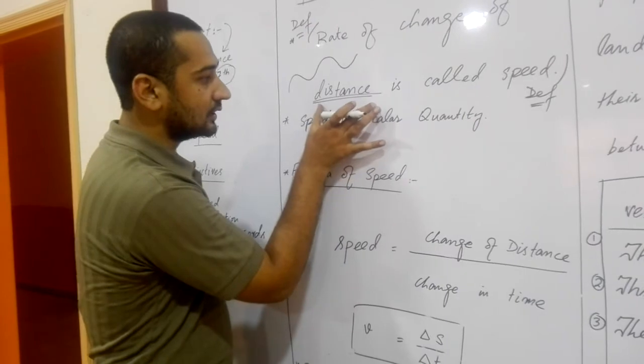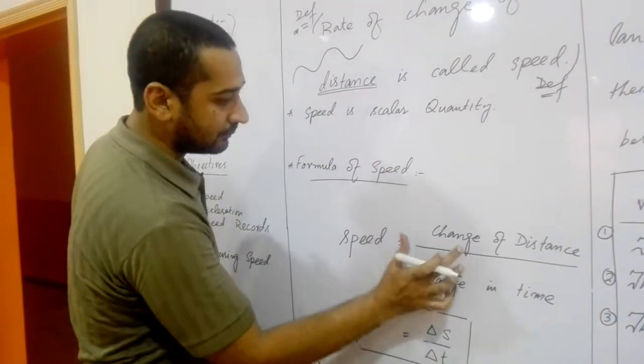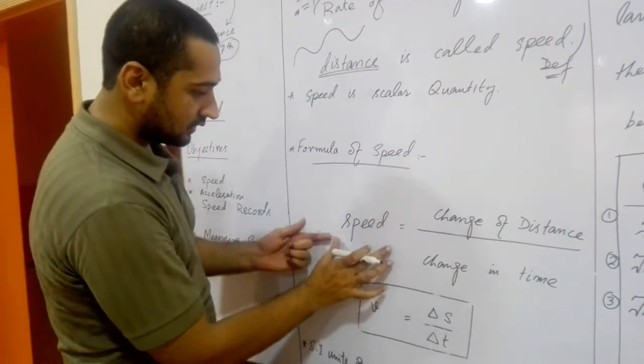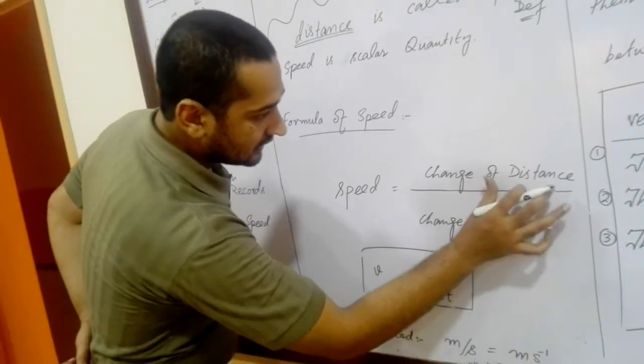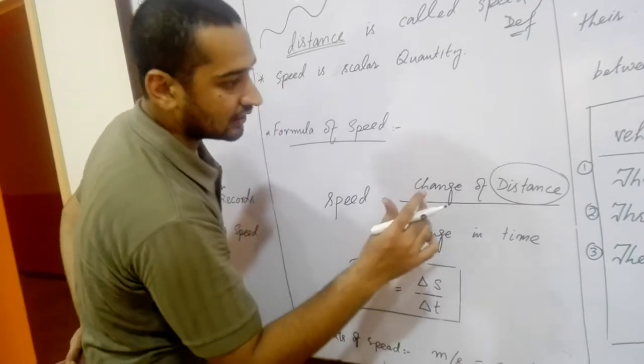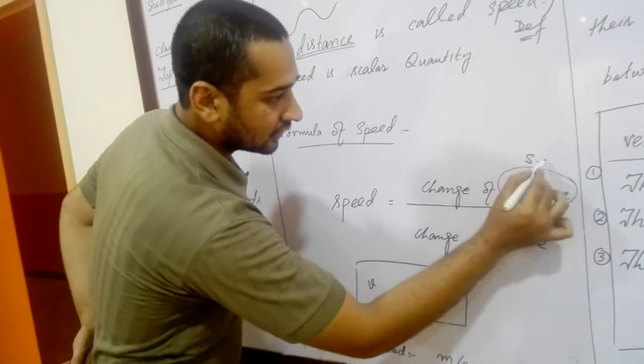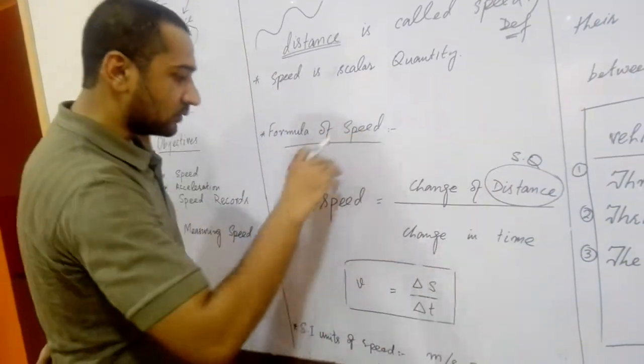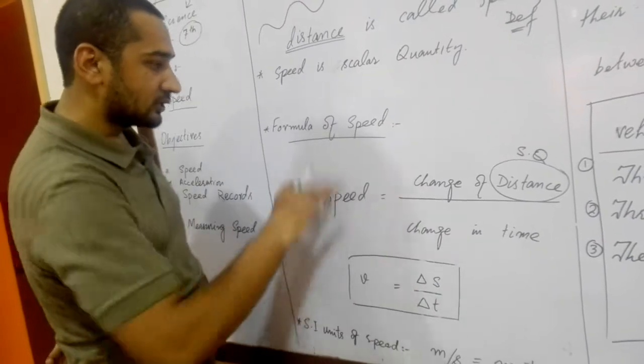So distance is scalar quantity. By dividing the distance with time, as shown in the figure, this formula we can say the change in distance. Basically due to this quantity is scalar, the output quantity which is speed is also scalar quantity.